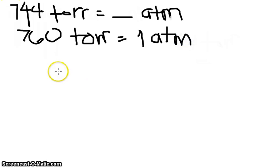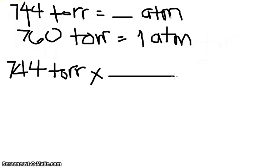Alright. So, we have to set up our solution. We are given 744 Torr. Now, to make use of the equivalent statement we have, which is 760 Torr in 1 Atmosphere, we have to convert that into conversion factors. In your conversion factors, remember that the numerator and denominator should be properly placed.